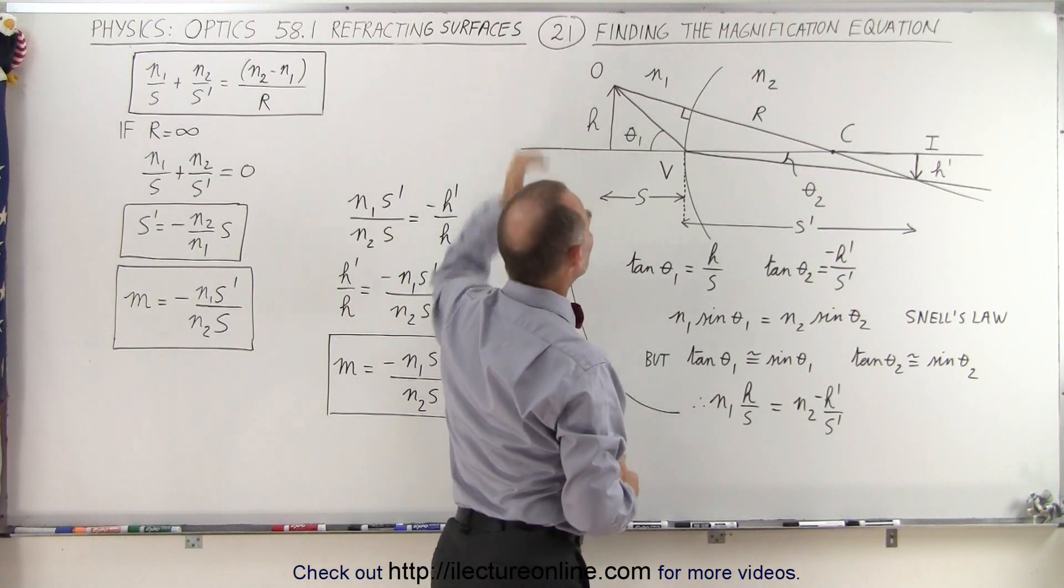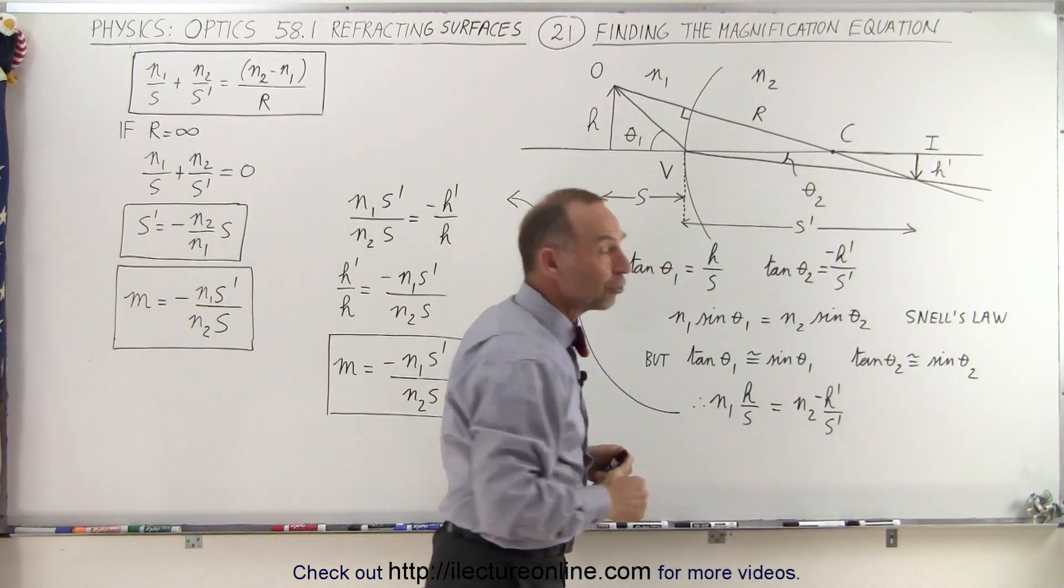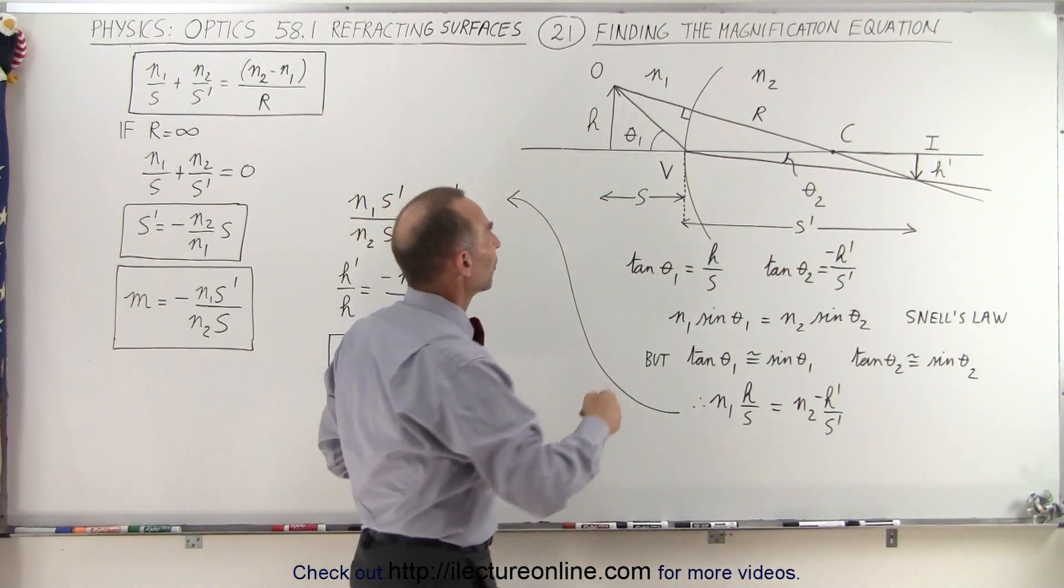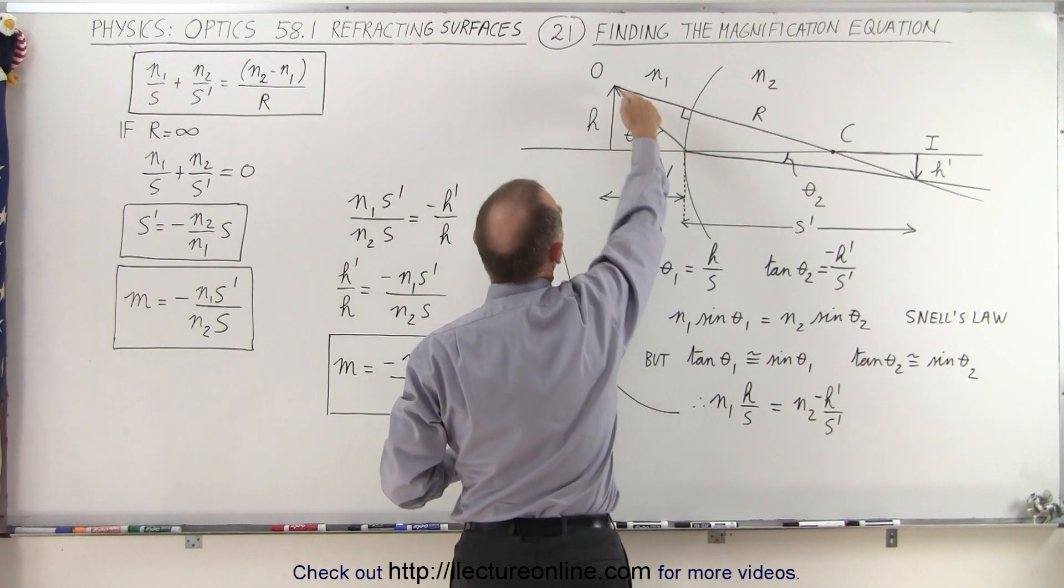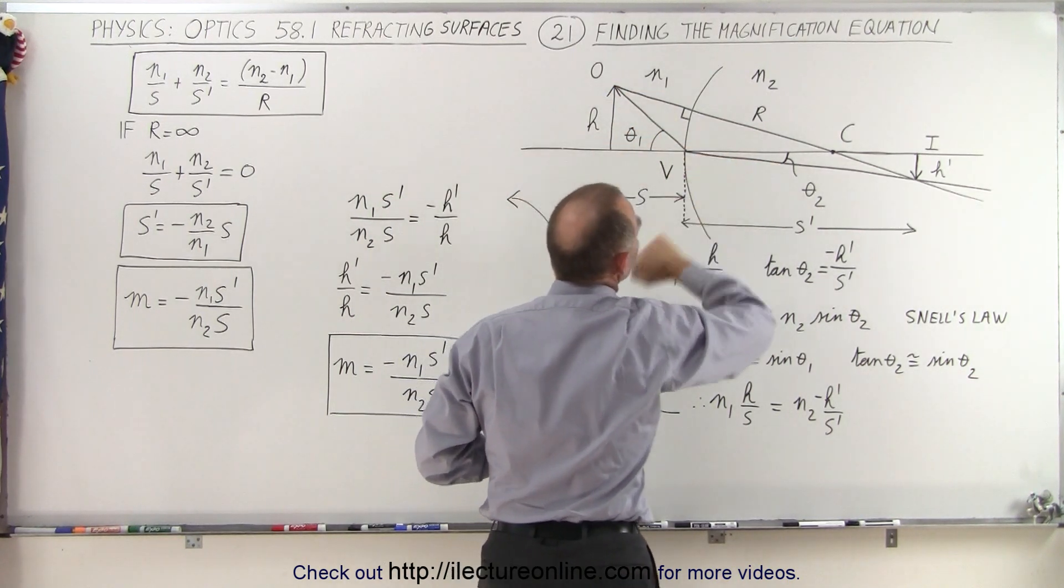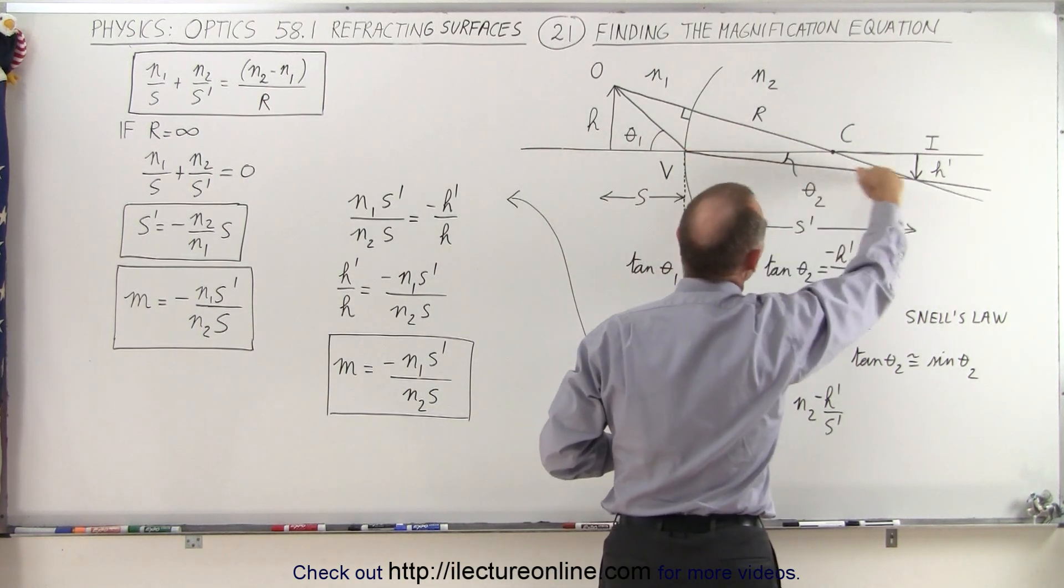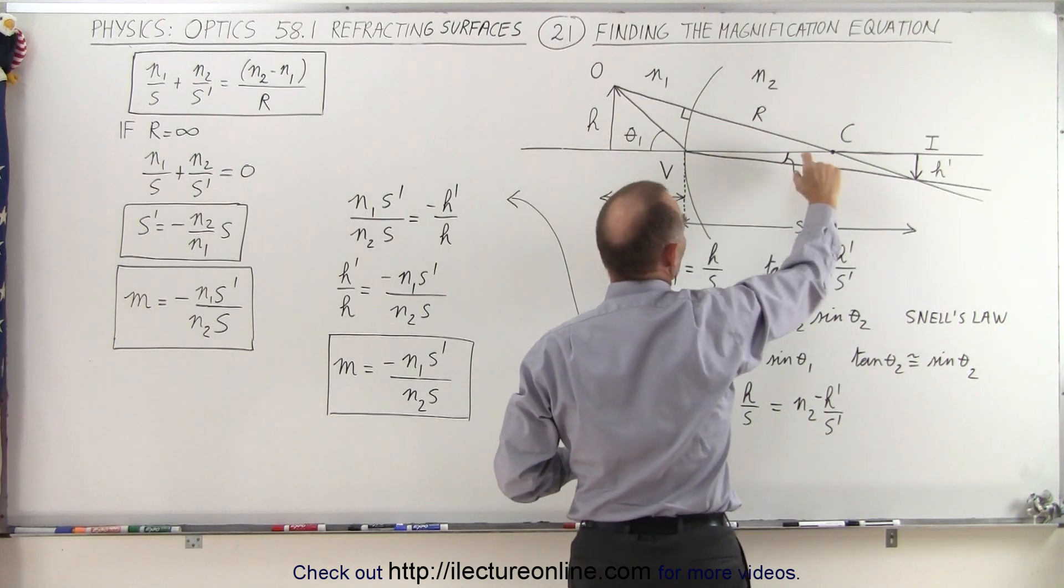H represents the height of the object, H prime represents the height of the image. Now we also are going to define two angles. Theta sub 1 is the angle between this ray and the optical axis right here, and theta sub 2 is equal to the optical axis, and the refracted ray that came here down to the vertex, we'll call that theta sub 2.